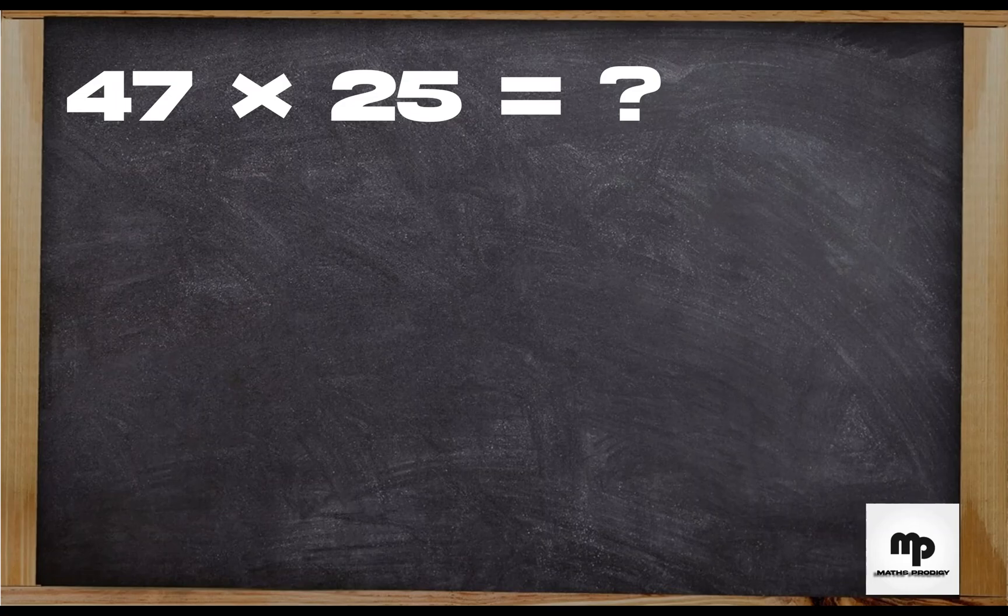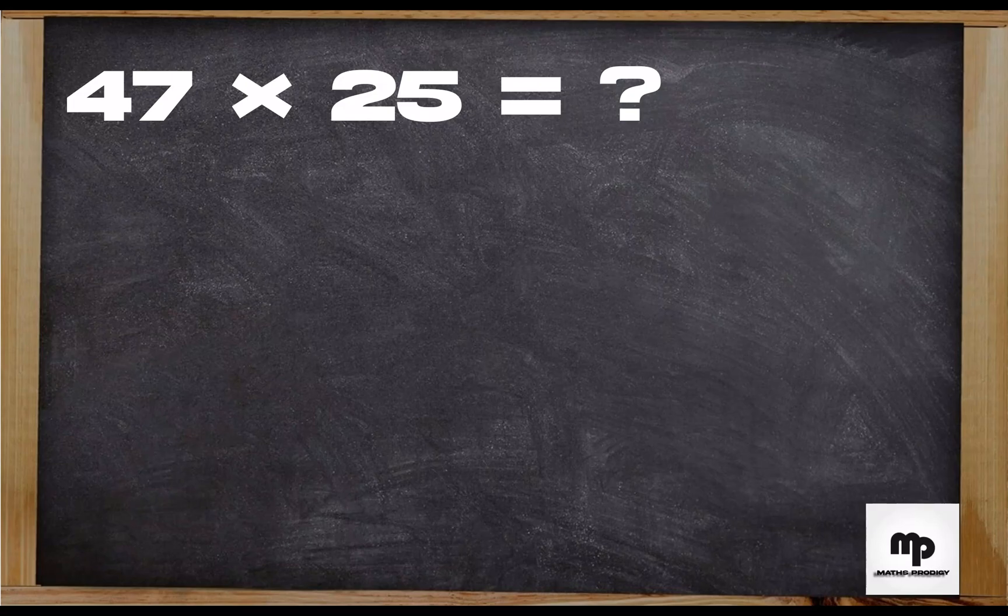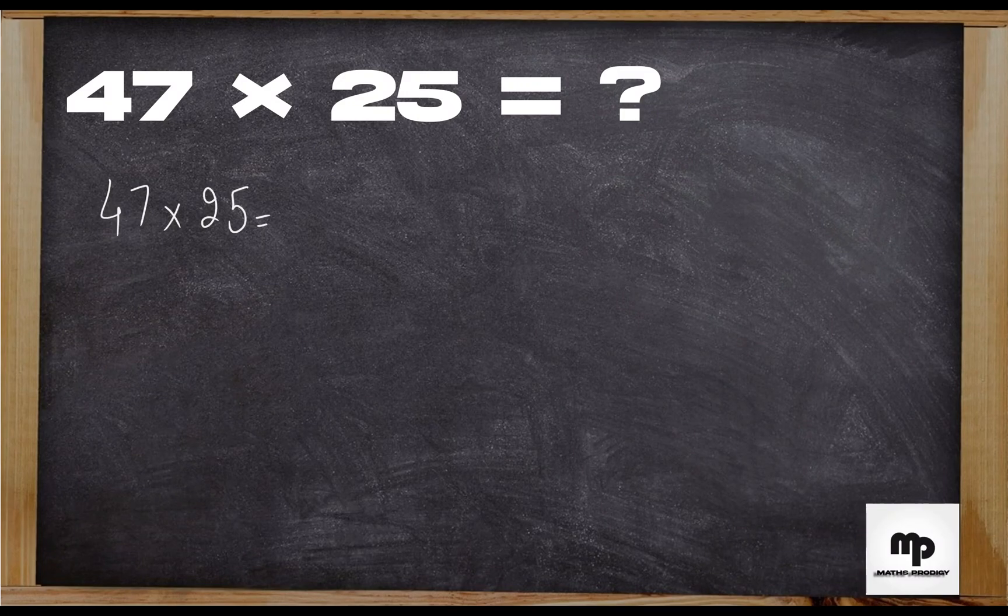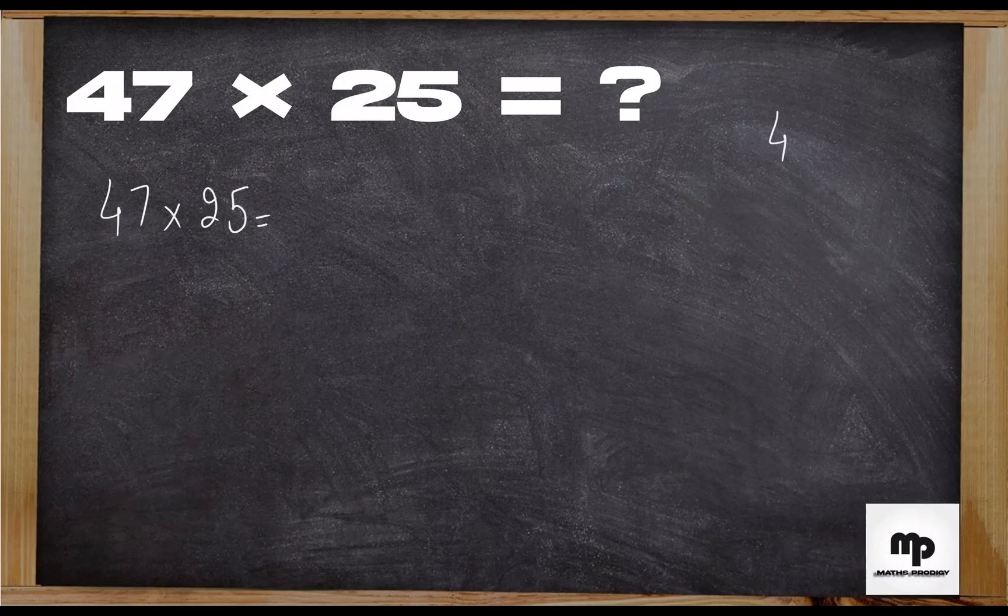So let's start by taking an example of 47 times 25. As you have learned in school, the vertical multiplication method is 47 by 25.